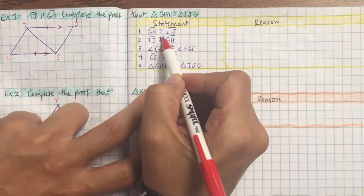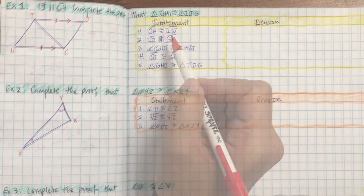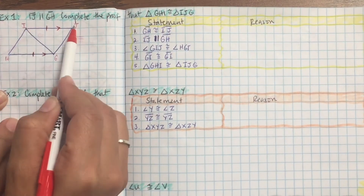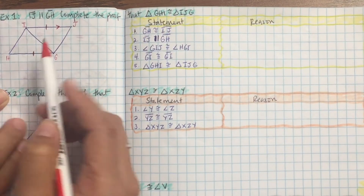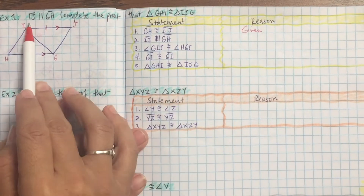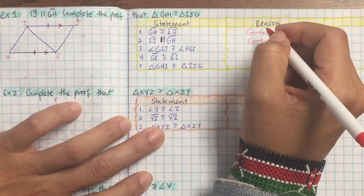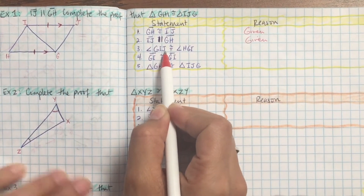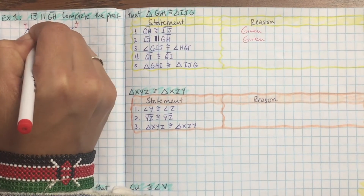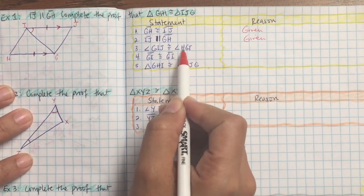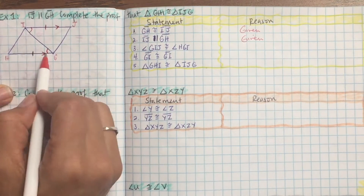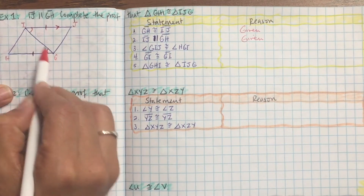Looking at the statements: why is GH equal to IJ? Because there's one tick on each one, so that's already given in the problem. Why is IJ parallel to GH? Because the question told us — that is a given statement. Then angle GIJ is congruent to angle HGI because you can see the Z shape — that's alternate interior angles.